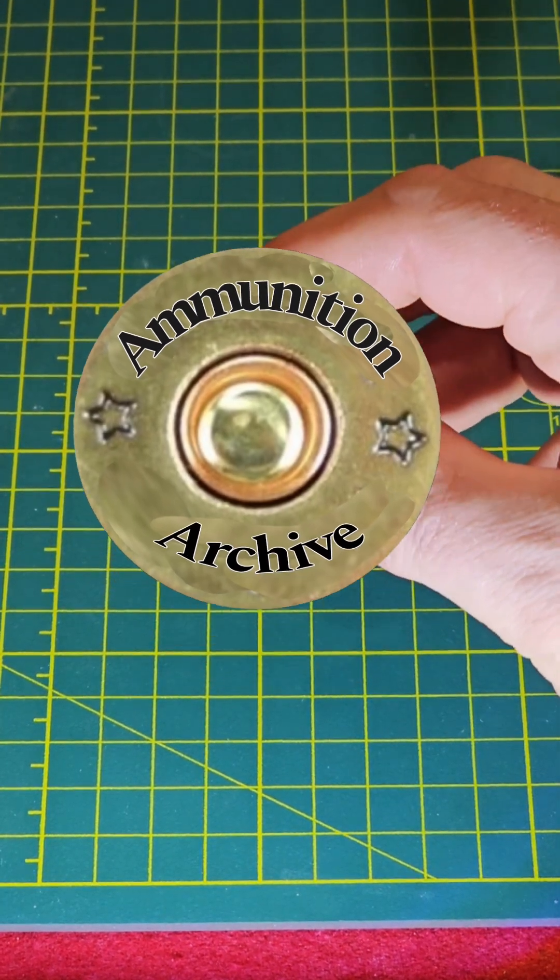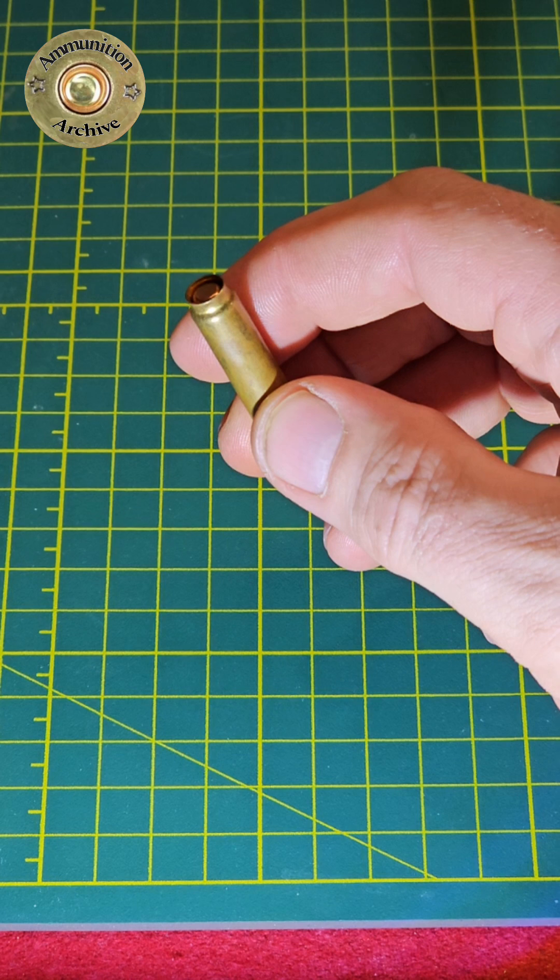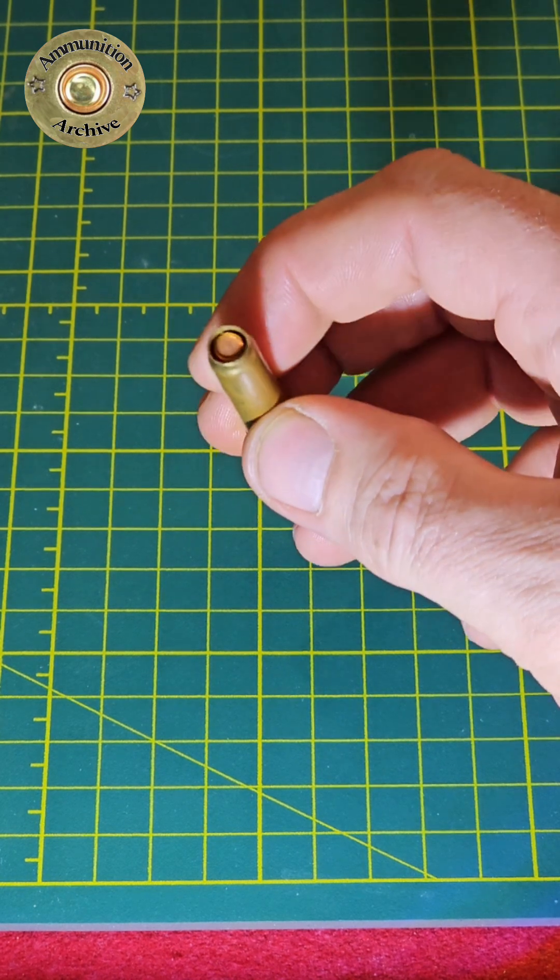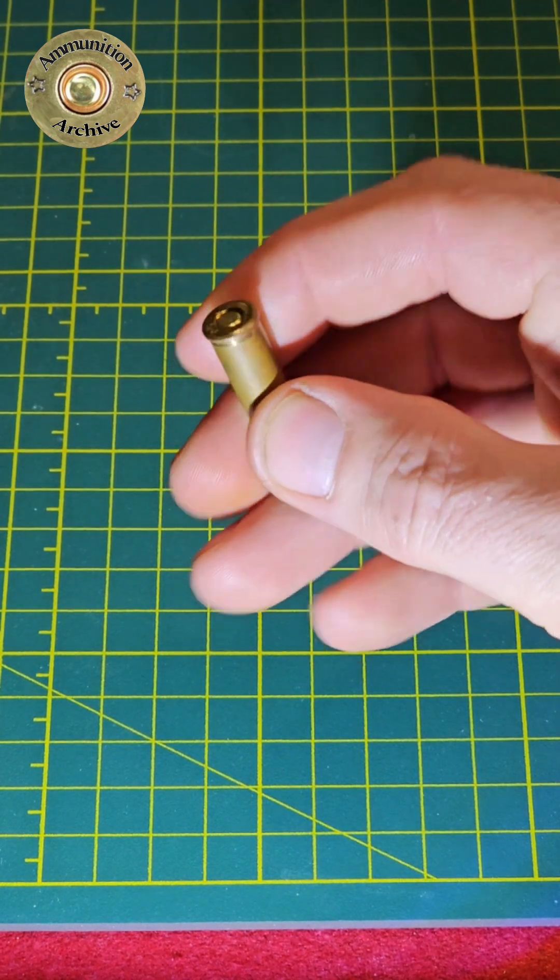Welcome to the Ammunition Archive, and this is the 7.62x38mm R-Nagant. You can see here it is a rim cartridge.